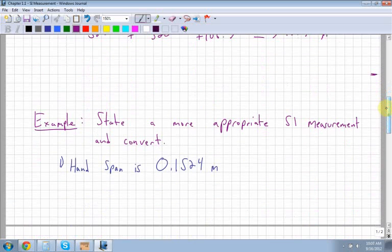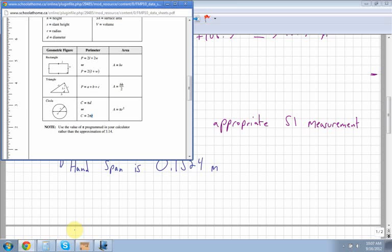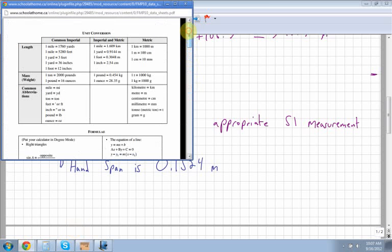Next example: State a more appropriate SI measurement, then convert. I'm telling you that a hand span is 0.1524 meters. For more appropriate measurements and conversions, check your data pages. Print off these data pages and use them for every quiz, test, and assignment.